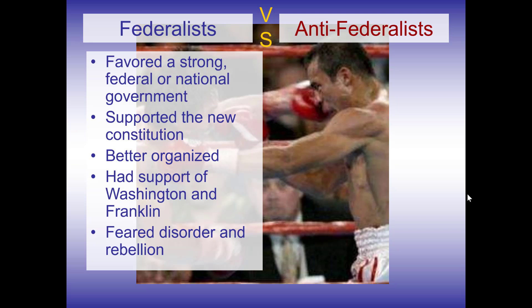People who were on the Federalist side were afraid of disorder and rebellion. Things like Shays' Rebellion scared them really bad, and so they wanted to make sure that things like Shays' Rebellion would not happen again.